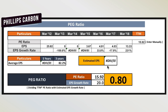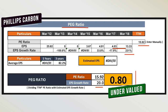Now we will evaluate Phillips Carbon using the PEG ratio. We need the current PE ratio and an estimated EPS growth. In the recent period of 2017-18, we saw very good growth in EPS — a 231% growth — but we cannot consider this rate for the next financial year. We assume a standard benchmark of 20% as the EPS growth rate. With this assumption, this company's PEG ratio will be 0.80, which indicates the company is undervalued. If the growth rate exceeds this benchmark, the company will be further undervalued on a one-year forward basis.